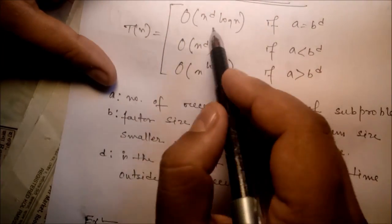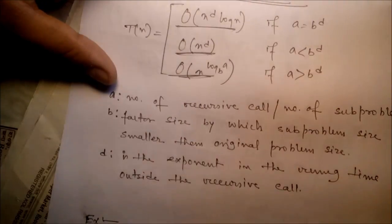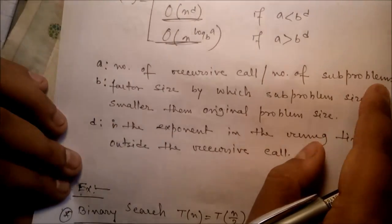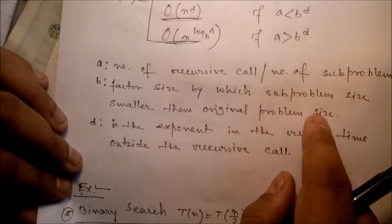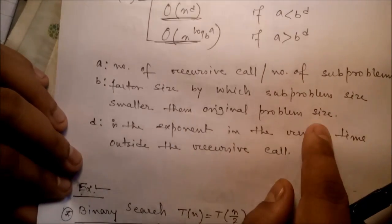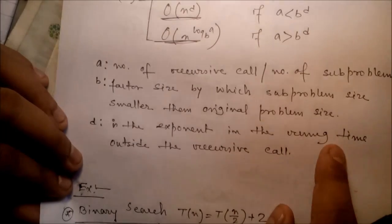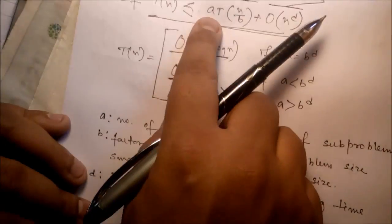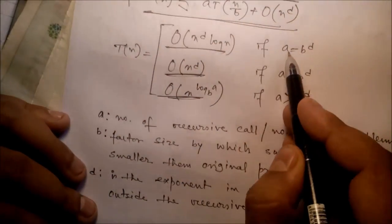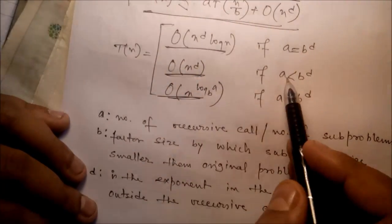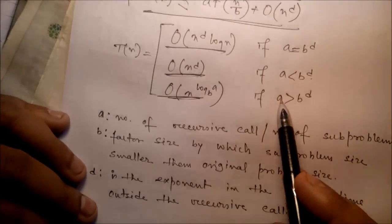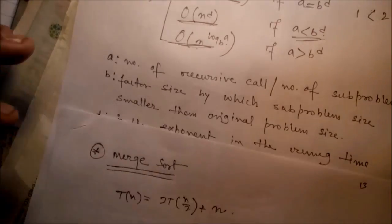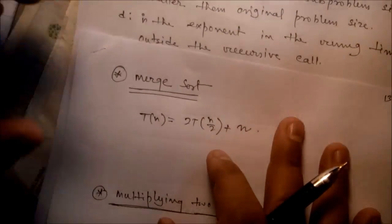Here, a is the number of recursive calls or sub-problems, b is the factor by which the sub-problem size is smaller than the original, and d is the exponent in the running time outside the recursive call — the combine part. If a equals b^d, complexity is O(n^d log n). If a is less than b^d, complexity is O(n^d). If a is greater than b^d, complexity is O(n^(log_b a)).